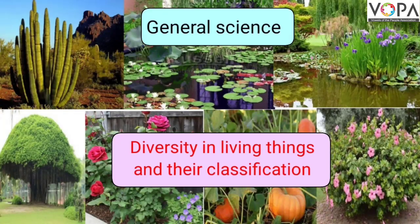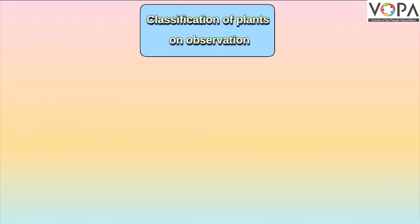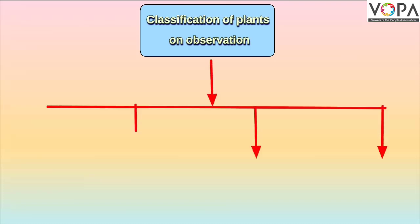Hello everyone. We have already studied that there are various kinds of plants. We can easily notice the differences in their size, shape, life span, the place they grow, and the flowering pattern of plants. It is easy to classify plants on the basis of observation. So let us learn about the different kinds of plants. Generally, on the basis of stem, plants are classified into four classes: trees, shrubs, herbs, and vines.